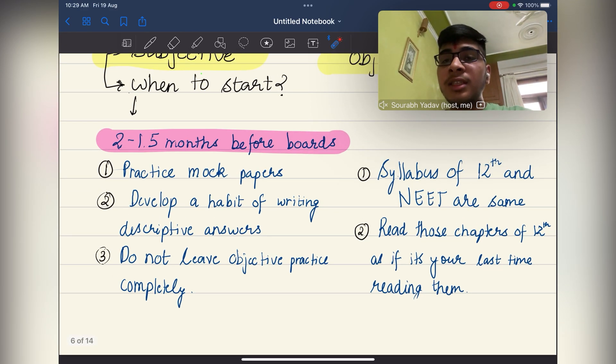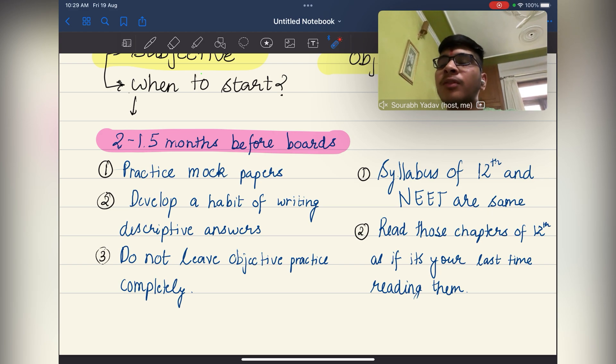While the boards are going on, the thing that you have to keep in mind is that you should not stop objective practice completely. You should practice almost 100 to 150 MCQs of any chapter that you think you might be forgetting or that is weak.